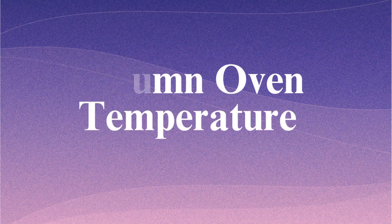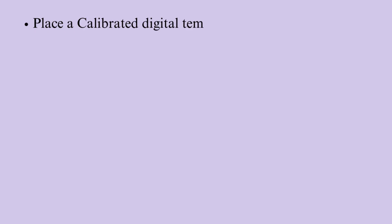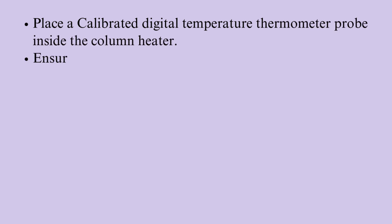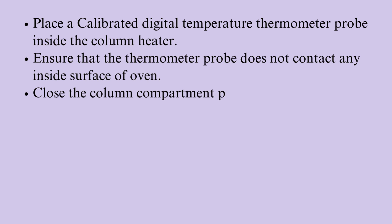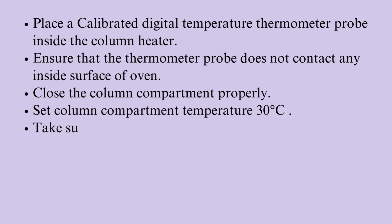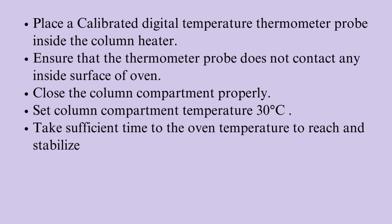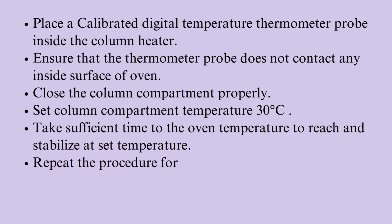Column oven temperature: place a calibrated digital thermometer probe inside the column heater. Ensure that the thermometer probe does not contact any inside surface of the oven. Close the column compartment properly and set column compartment temperature to 30°C. Allow sufficient time for the oven temperature to reach and stabilize at the set temperature. Repeat the procedure for 40°C and 60°C, and record the results.